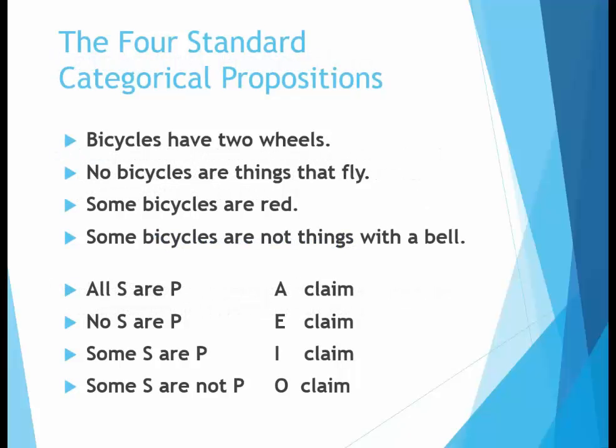In the system of logic called categorical logic or classical logic, there are four standard propositional forms used to evaluate inferences. I'll sometimes call them claims rather than categorical propositions. Each claim is represented by a letter: all S are P is an A claim, no S are P is an E claim, some S are P is an I claim, and some S are not P is an O claim. For instance, all bicycles are things with two wheels is an example of an A claim, saying that all things called bicycles are also things that have two wheels.